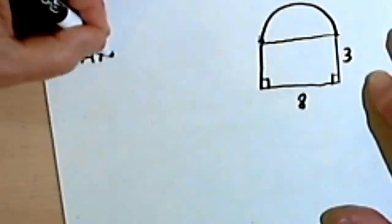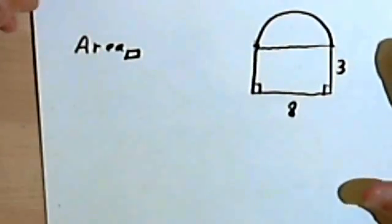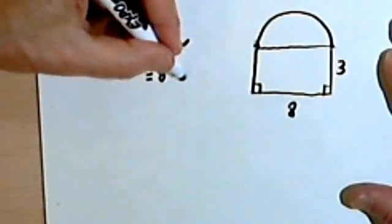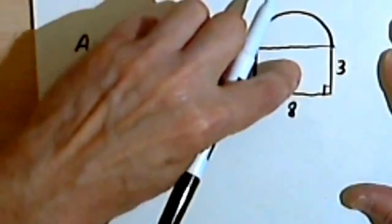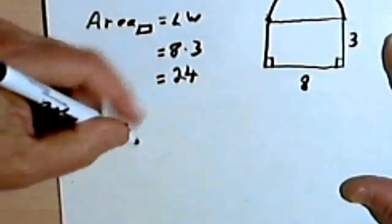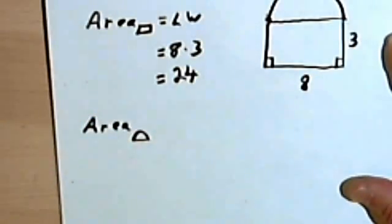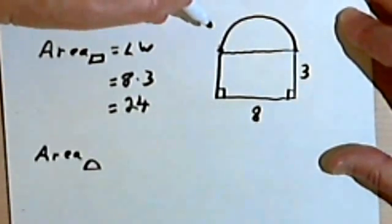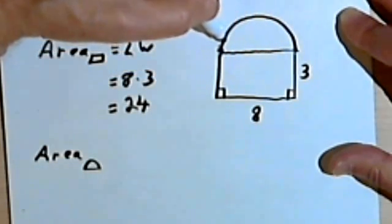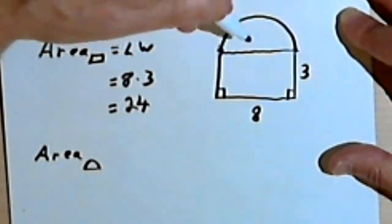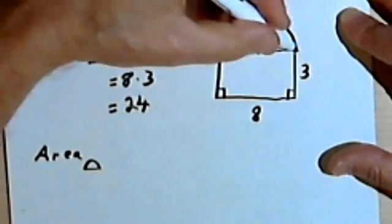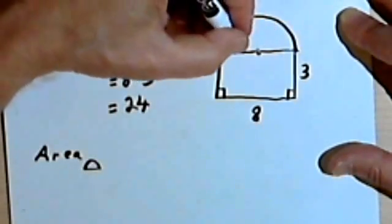The area for the rectangle should be pretty easy to find. I'm just going to multiply the length times the width, which will be 8 times 3. So the area for the rectangle is 24 square units. Now I want the area for that semicircle, the half circle. I know the formula for the area of a circle — area equals pi r squared. So what I'm going to do is think: if this was a circle, what would its area be, and then divide that amount by 2 to find the area of half of it. I need to find the radius. If this was a circle, this distance here would be the diameter, so half of the diameter is the radius, and that would be 4.